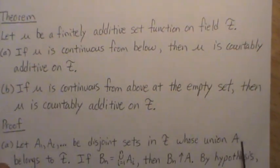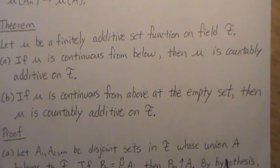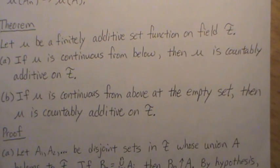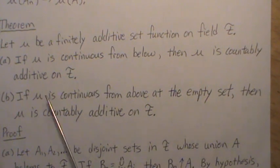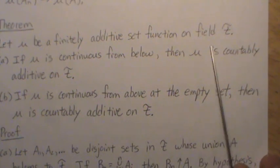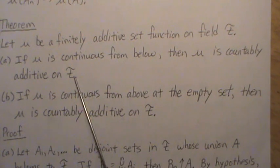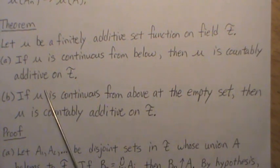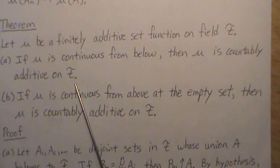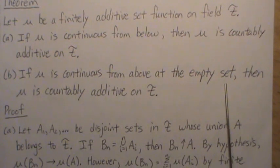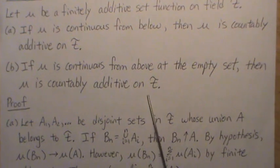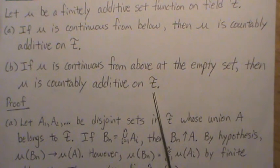One theorem we will need in upcoming videos — and this will be used over and over: let mu be a finitely additive set function on the field F. If mu is continuous from below, then mu is countably additive on the field F. If mu is continuous from above at the empty set, then mu is countably additive on the field F.